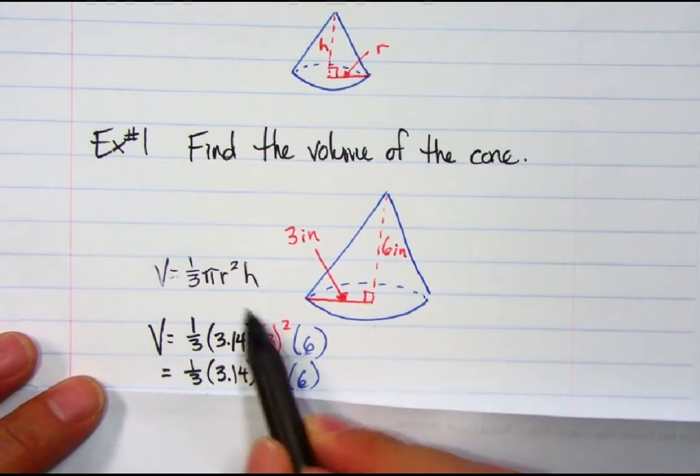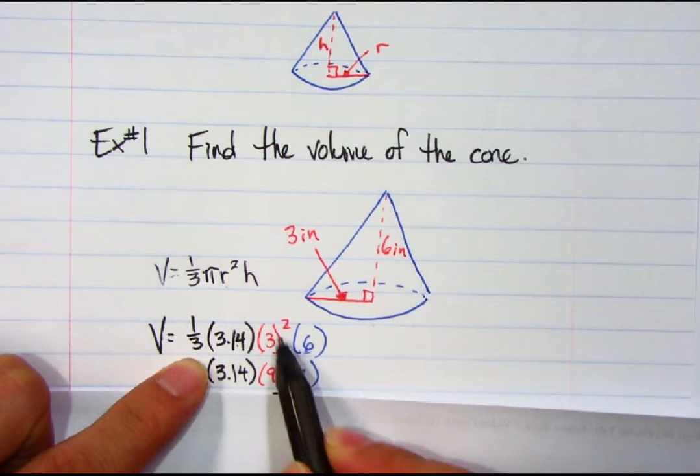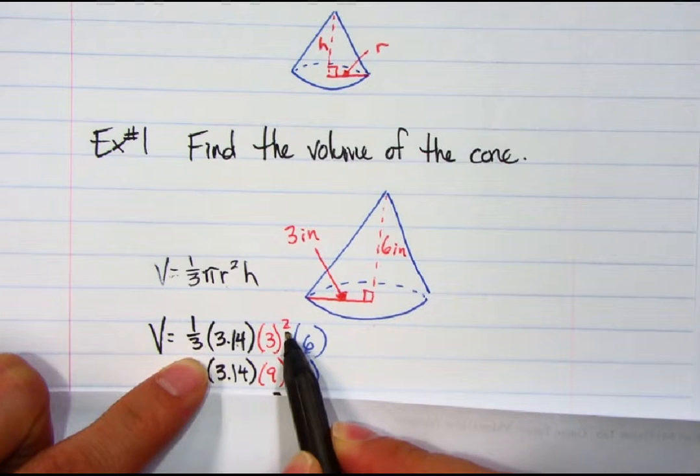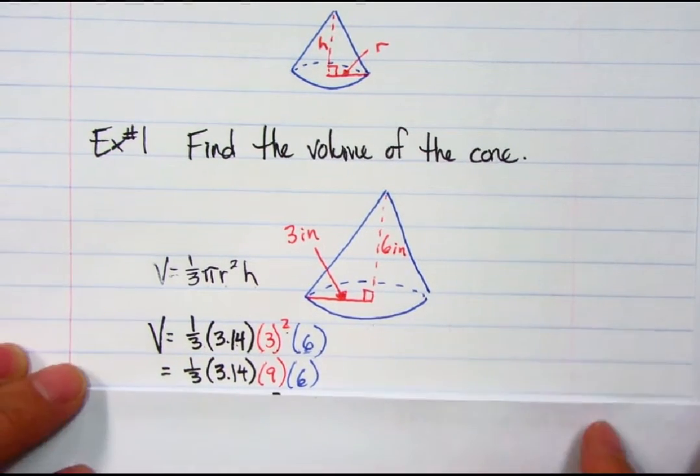In this case, we're going to take pi, 3.14. One-third stays the same. Radius in this case is 3, so I'm going to put 3 there and square it. And then lastly, I'm going to multiply by the height, which is 6.